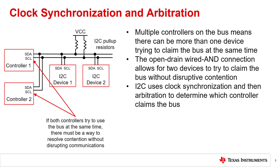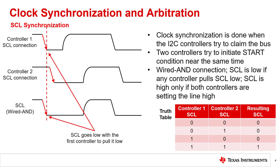This is helpful in arbitration without disruption to the communication. In systems with only one controller, this arbitration isn't necessary. We'll describe in detail how multiple controllers synchronize clocks for I2C communication. We'll also describe how controllers use arbitration to determine which controller wins the bus without disruptive contention. To prevent bus contention, clock synchronization is first performed using the SCL line and the open drain connections from the controllers on the bus.